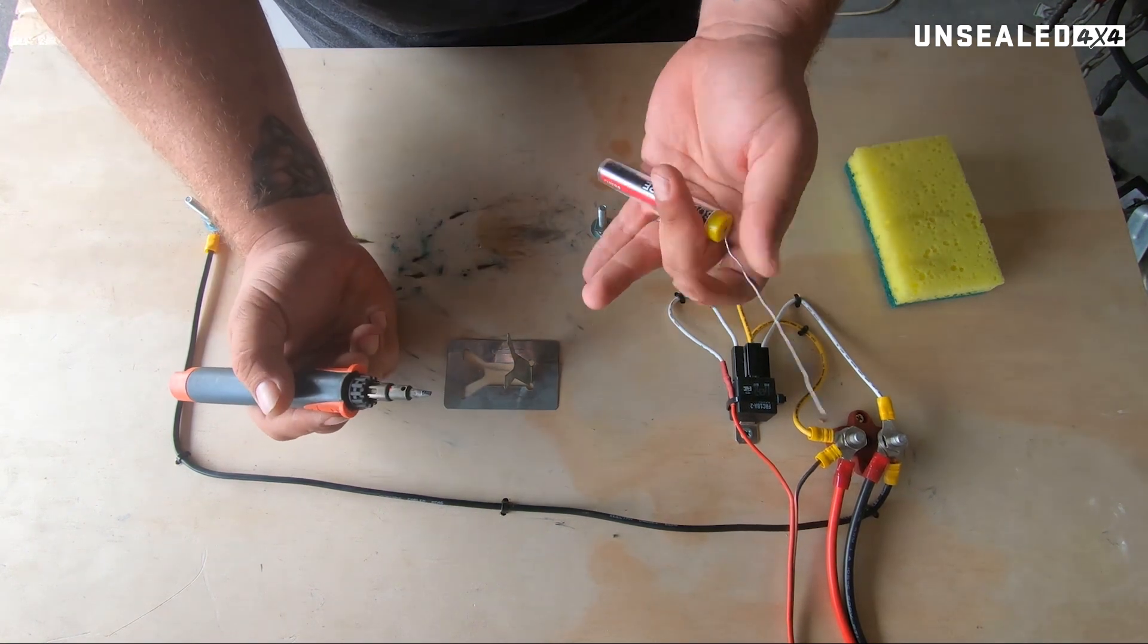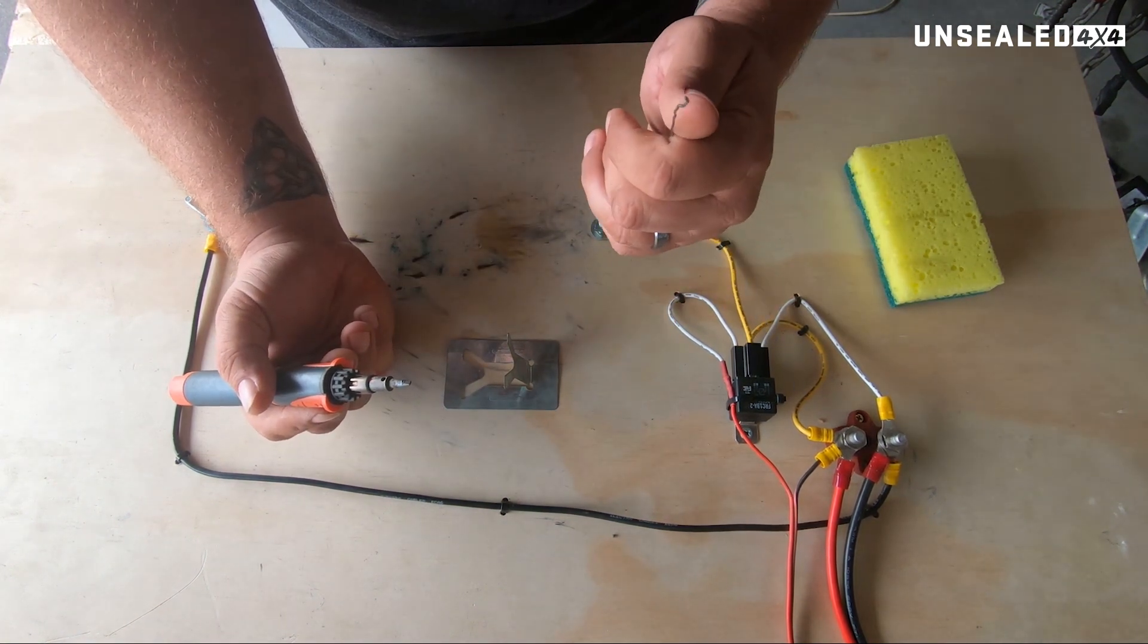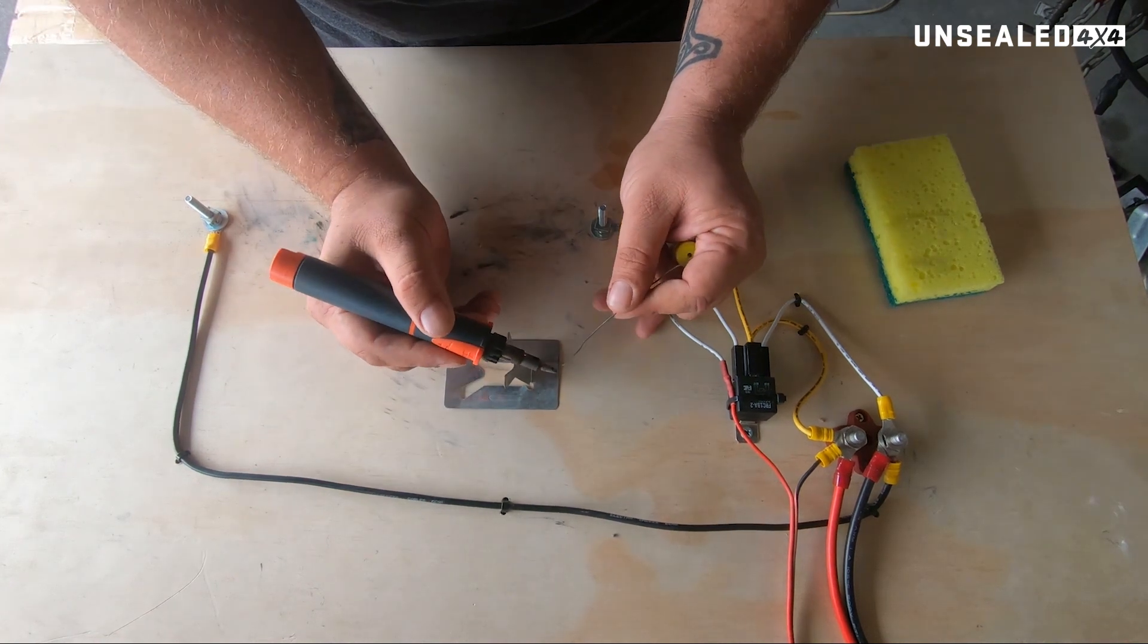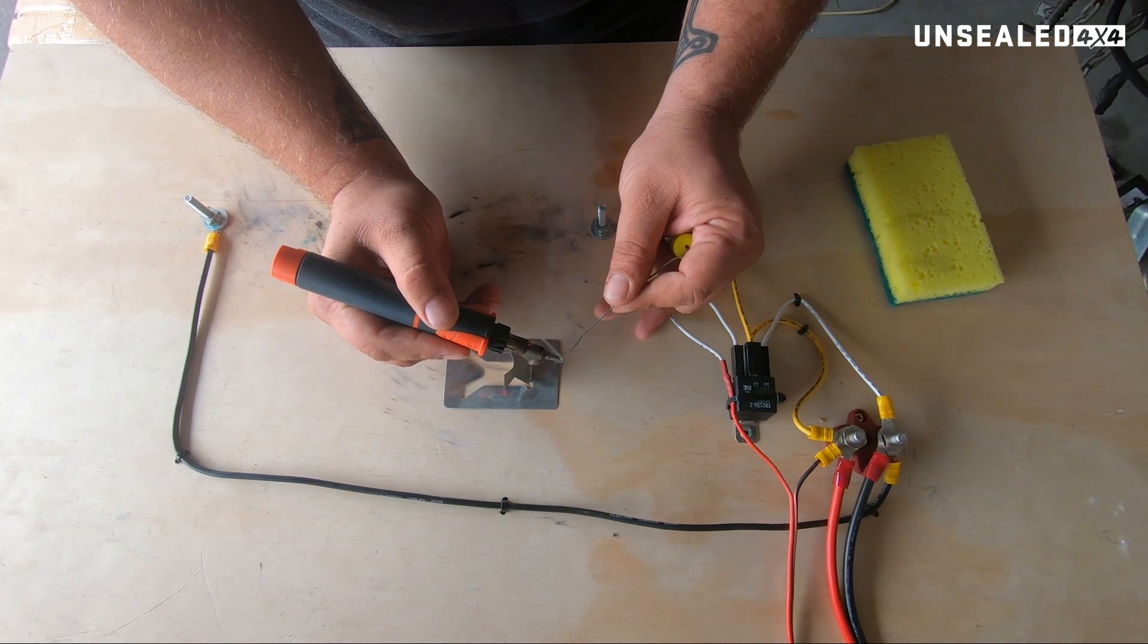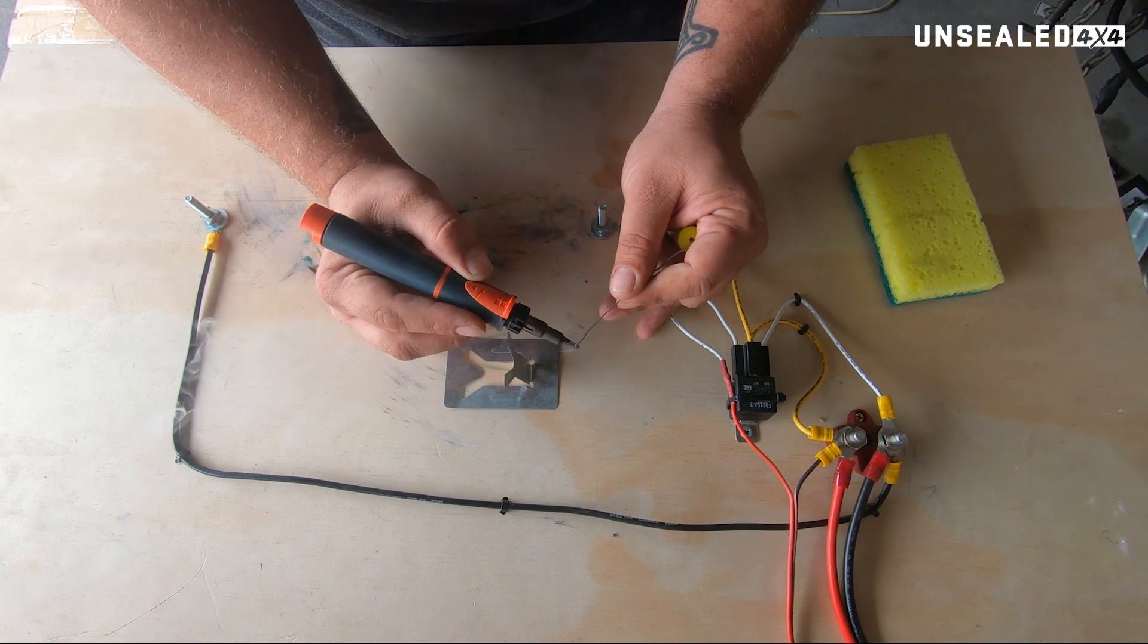It does have a flux core. It's got 2% flux core on the inside of it. So as you touch that to the soldering iron, it will melt off.